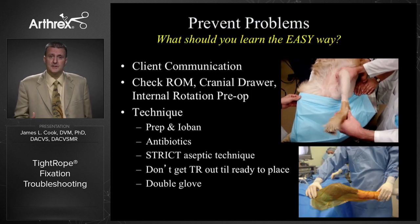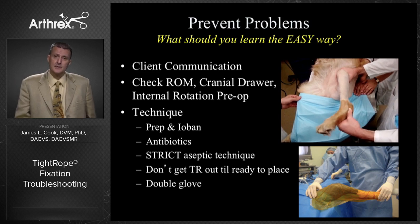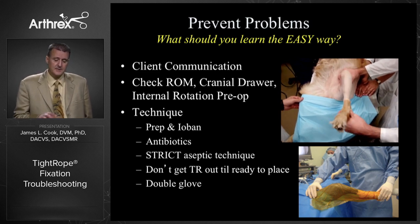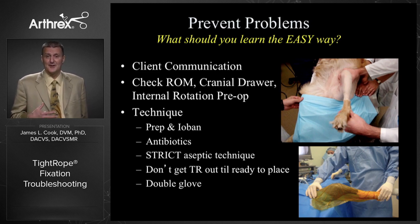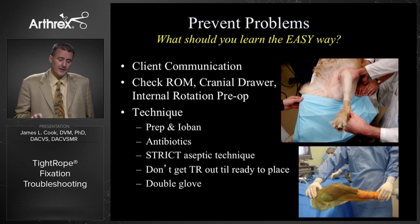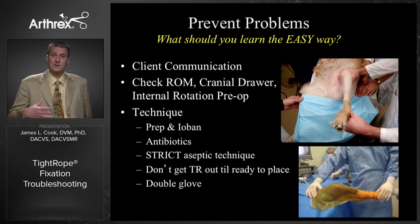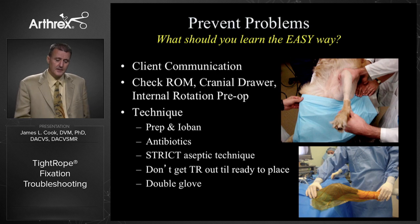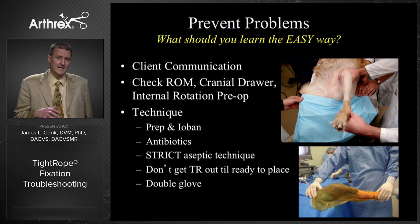The first troubleshooting is really preventing problems. We do have a whole video on this, so you can look at that one as well. These are things you can learn the easy way — learn from my mistakes and other people's mistakes along the way. The first one is client communication. We really need to do a good job of explaining what Tightrope is all about, parts of what we're going to do, their role, and their engagement in the process — it's really critical.